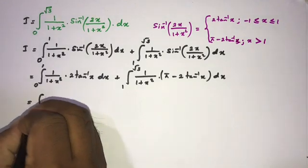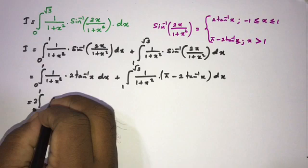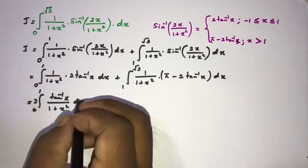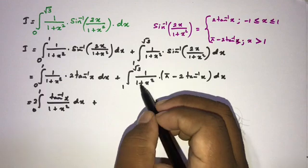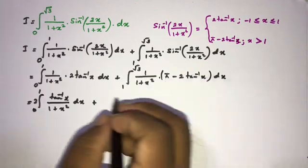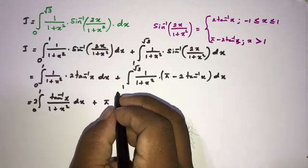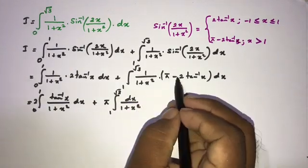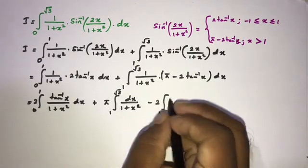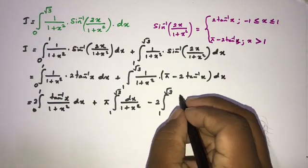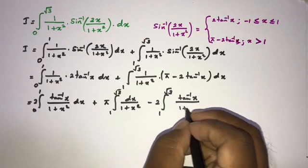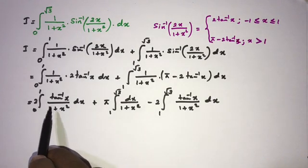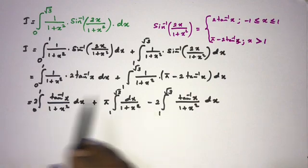We rewrite I as: 2 times the integral from 0 to 1 of [inverse tan of x over (1 plus x squared)] dx, plus pi times the integral from 1 to square root of 3 of [dx over (1 plus x squared)], minus 2 times the integral from 1 to square root of 3 of [inverse tan of x over (1 plus x squared)] dx, since 2 is a constant and can be taken outside the integral sign.